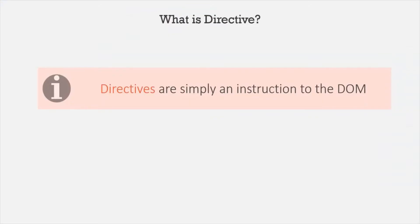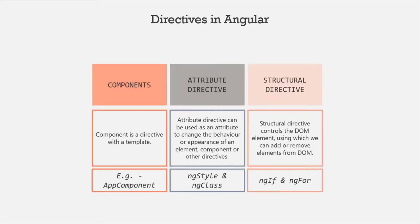Directives are simply an instruction to the DOM, and components are also a kind of directive in Angular — but components are directives with a template. We can classify directives into two types: Attribute Directive and Structural Directive. The Attribute Directive can be used as an attribute to change the behavior or appearance of an element, component, or other directives — examples being ngStyle and ngClass. Structural Directives control the DOM by adding or removing elements, with ngIf and ngFor as examples.